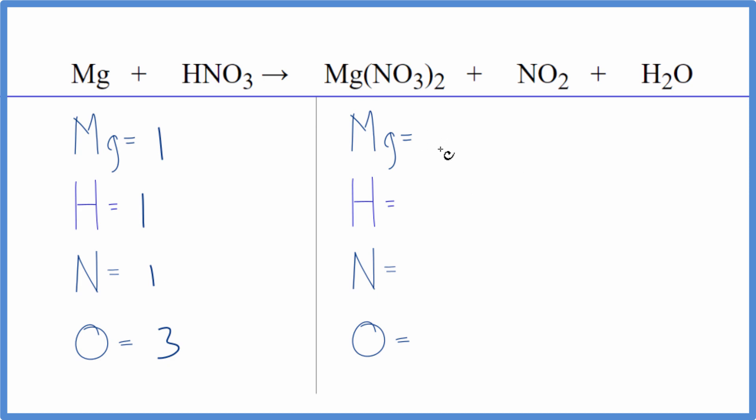Product side, one magnesium, two hydrogens. Nitrogens, we have two times one is two, plus don't forget this nitrogen here. So we have three nitrogen atoms. And then oxygen, two times three is six, plus two, plus the one in the water. So we have nine oxygen atoms.